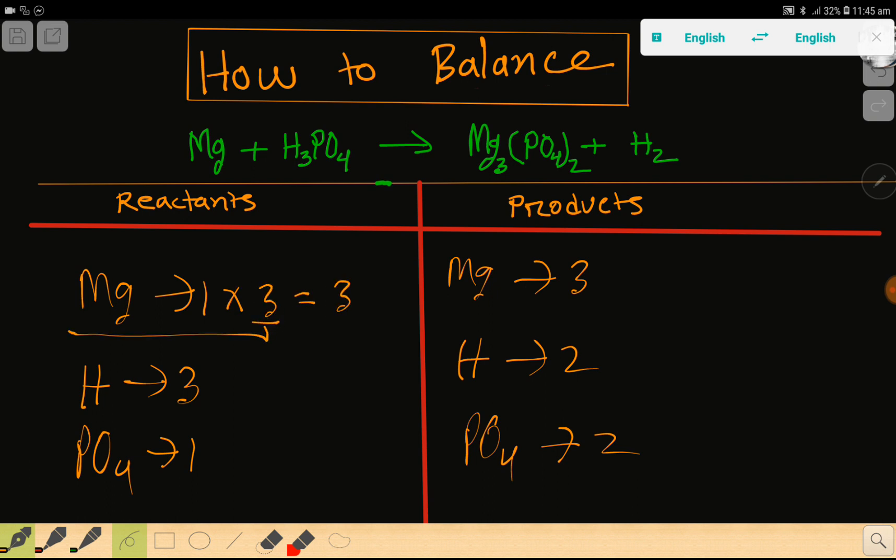Then here hydrogen is 3, hydrogen is 2. So to balance the hydrogen, you can multiply here by 2 (that gives you 6), and if you multiply here by 3, that gives you 6. If you multiply here by 2, then these 2 must come before this hydrogen.